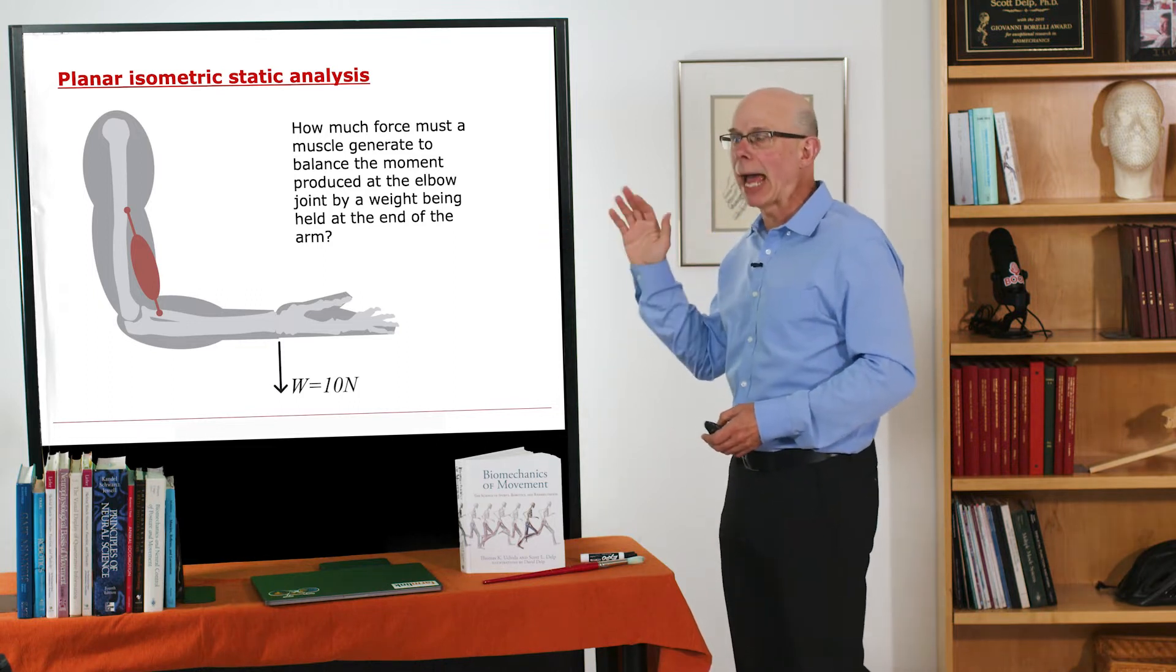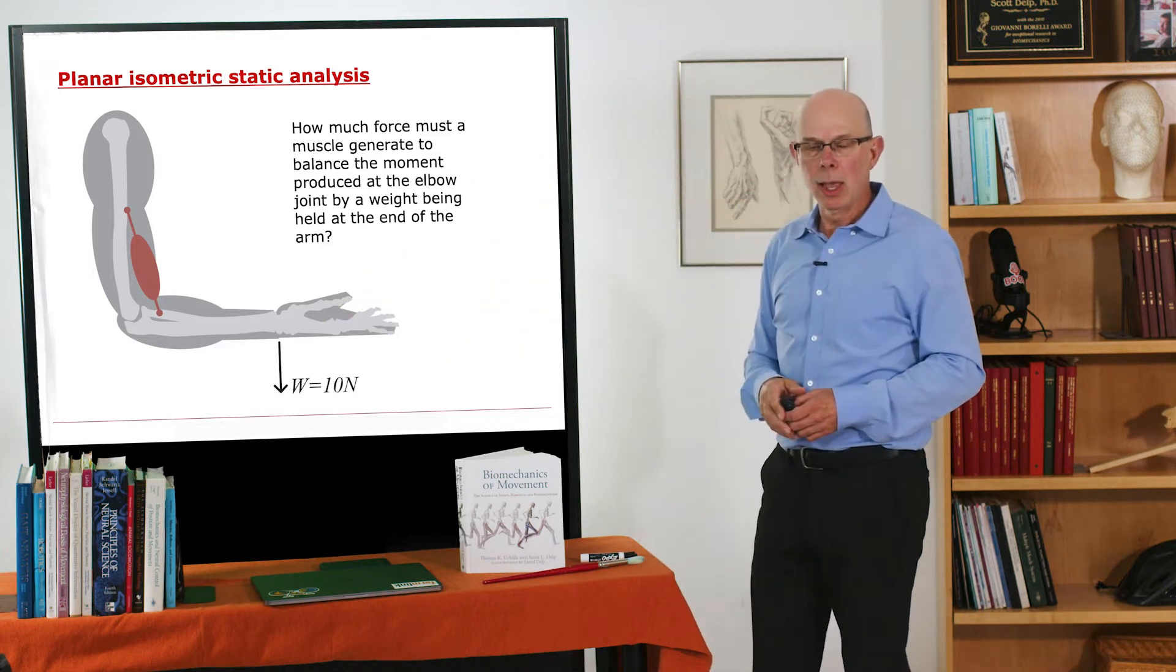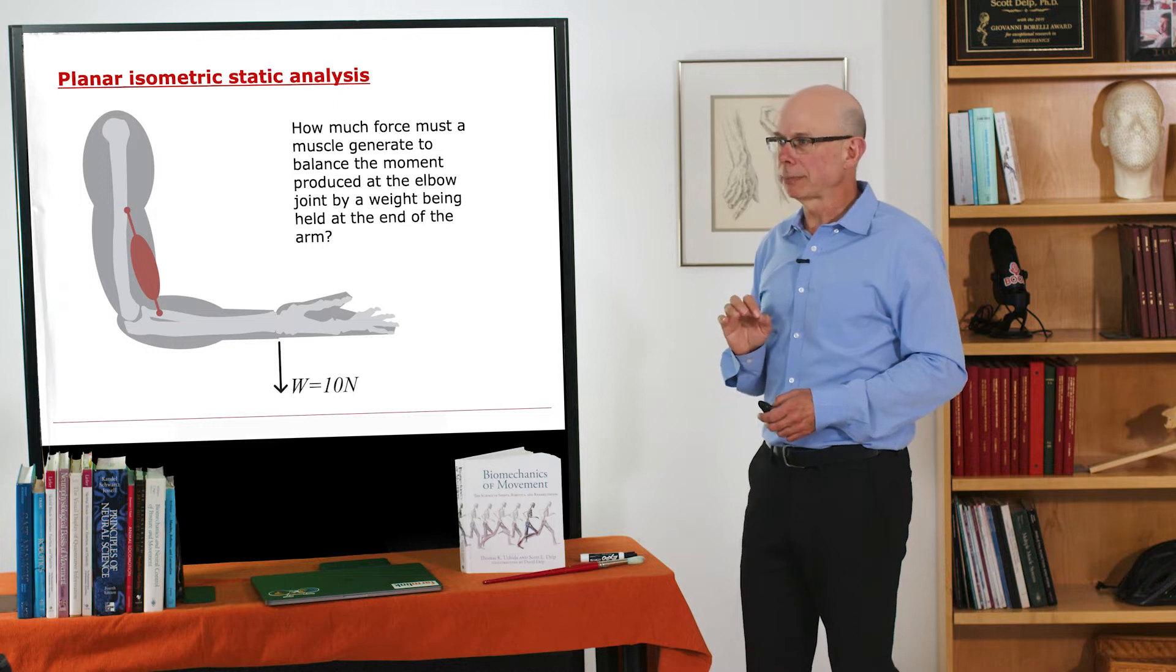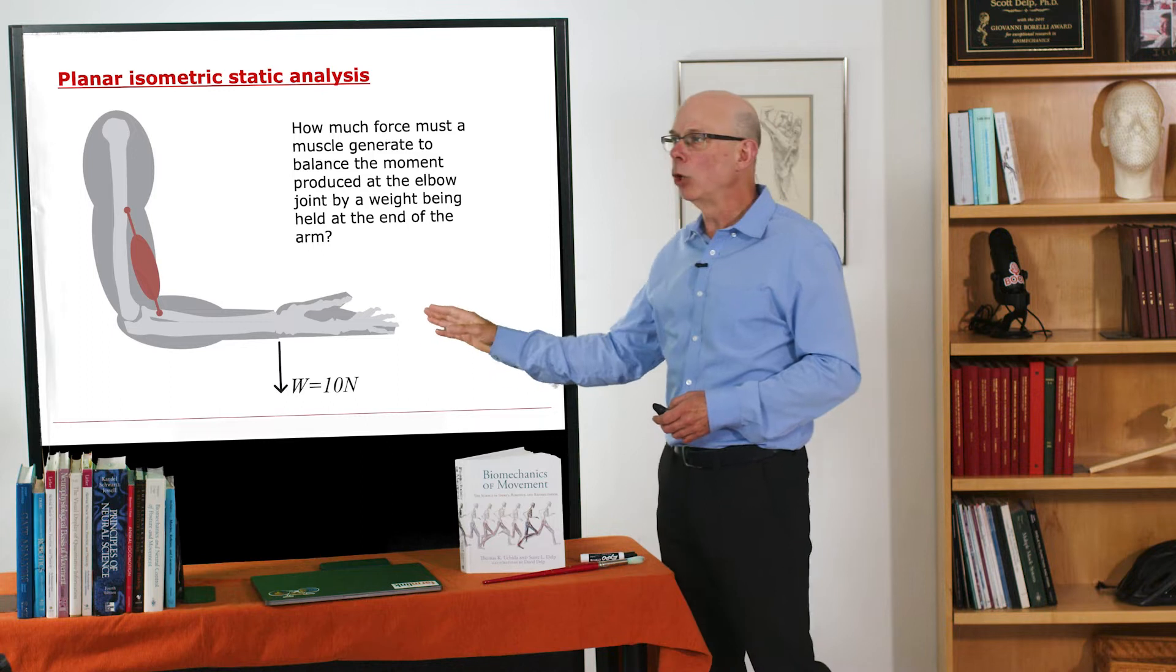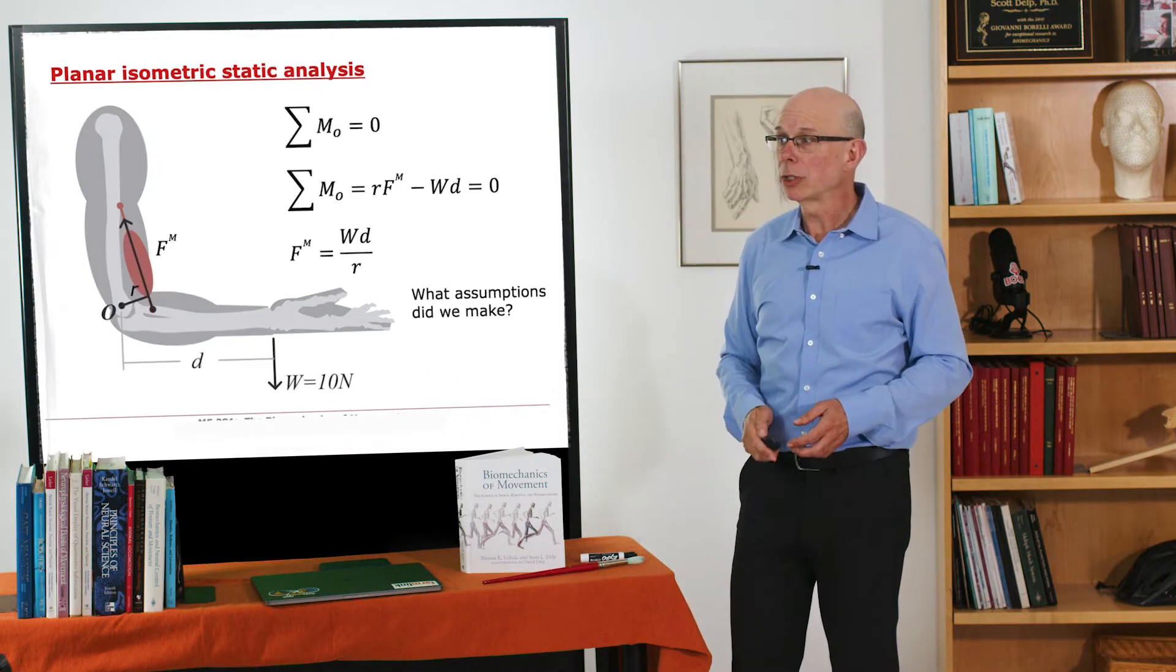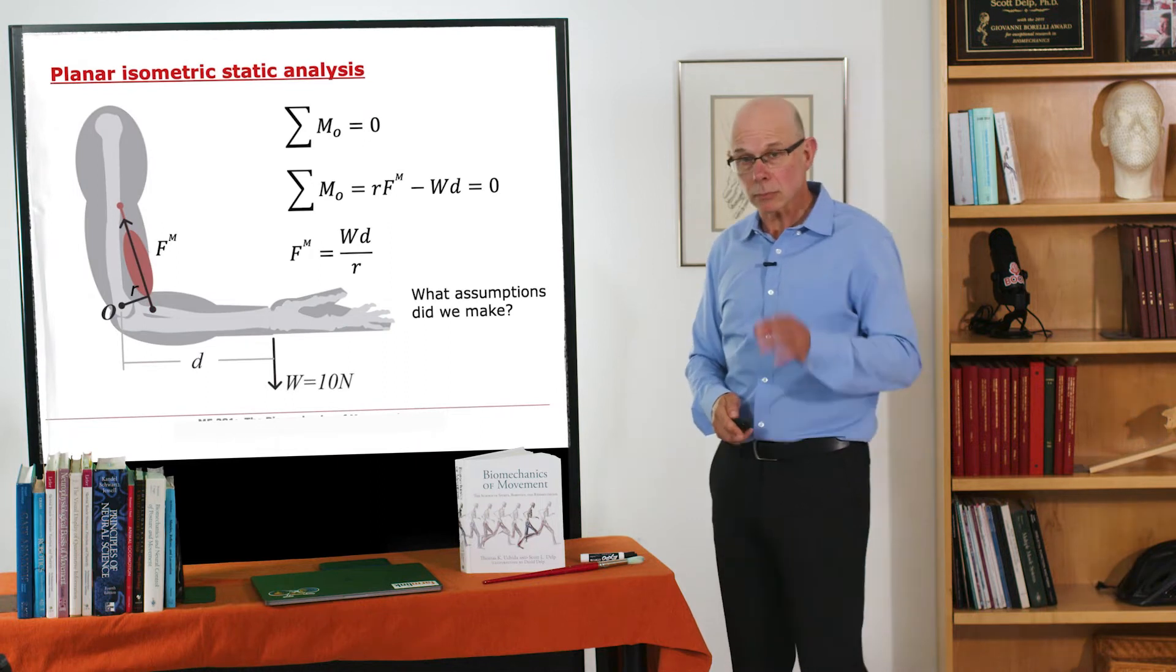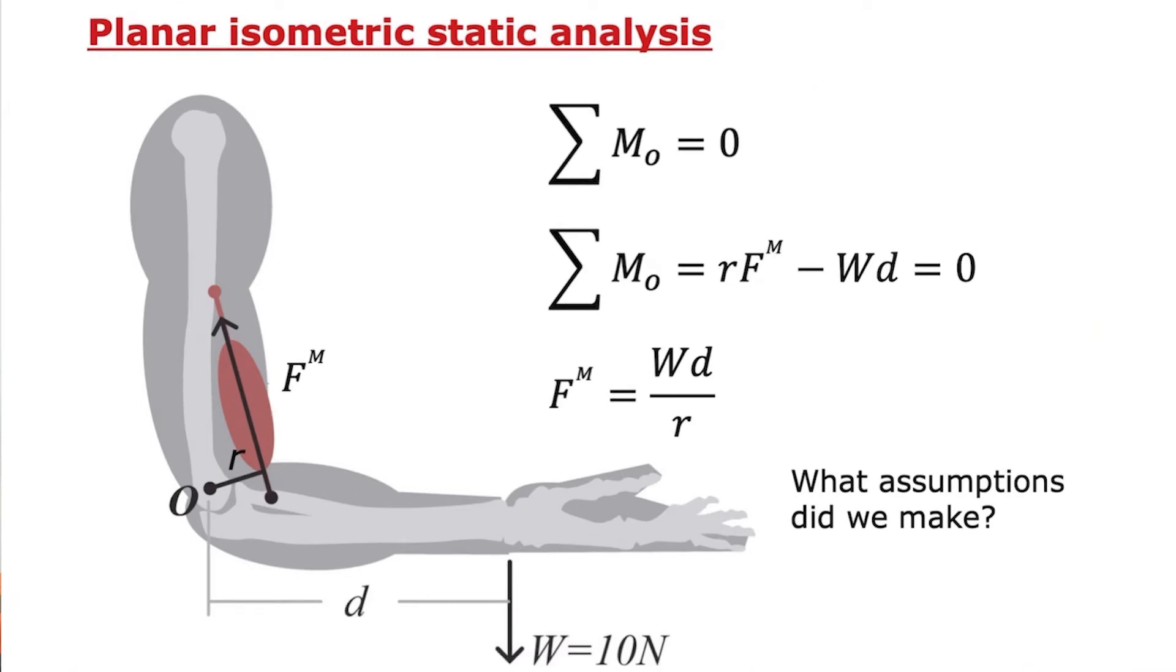So here's a planar static analysis. We're going to assume this arm is just in the sagittal plane. And we want to know how much force a muscle has to generate to balance a 10 Newton weight at the end of the arm. The weight W is acting at a distance D from the point O, the axis of the elbow.